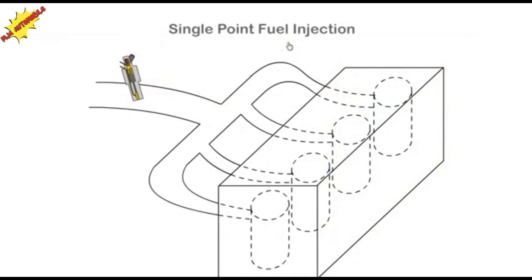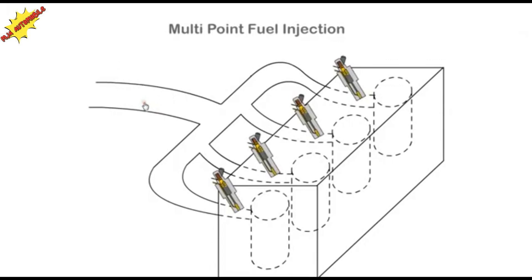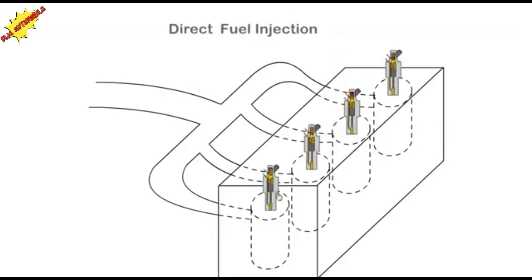There are various layouts for the fuel injectors. Single point: one injector is used for all cylinders. Multi-point: an injector is provided before each inlet barrel, and the fuel is sprayed as each valve opens. And direct injection: the fuel is injected directly into the cylinder.